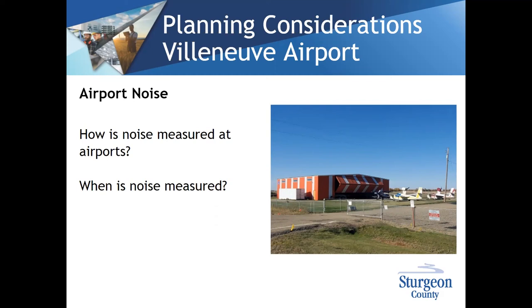There is insufficient air traffic at Villeneuve to properly calculate NEF contours. What people experience here is considered to be individual occurrences — it doesn't mean they don't happen or aren't annoying, but they are insufficient in volume to calculate a noise exposure contour. Flight paths for aircraft, particularly fixed-wing, are identified through Nav Canada and Transport Canada, and aircraft are supposed to follow those flight paths. Helicopters have a little more flexibility. This airport was built in 1976 by Transport Canada for flight training and has been a successful general aviation airport.